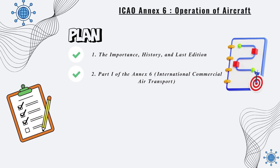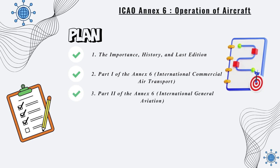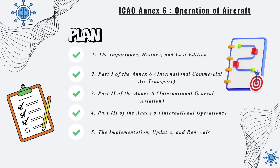Then we will move on to Part 1 of Annex 6, International Commercial Air Transport, followed by Part 2, International General Aviation, and then Part 3, International Operations. After that, we will cover its implementation, updates, and renewals. We will conclude with a brief summary.